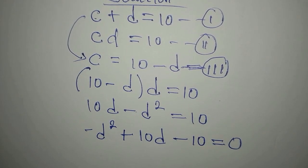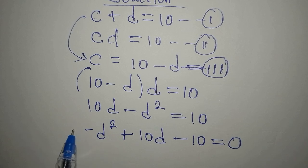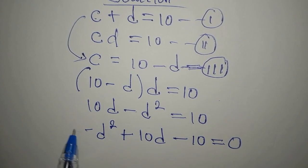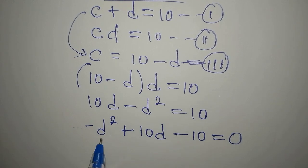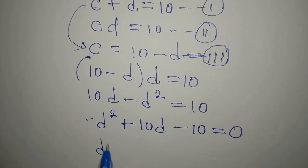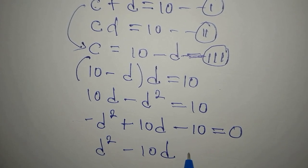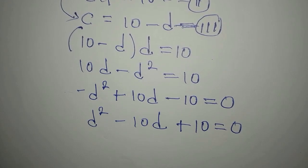Now we remove the negative sign by multiplying everything by negative 1. This gives us d squared minus 10d plus 10, all equal to zero — our standard quadratic form.